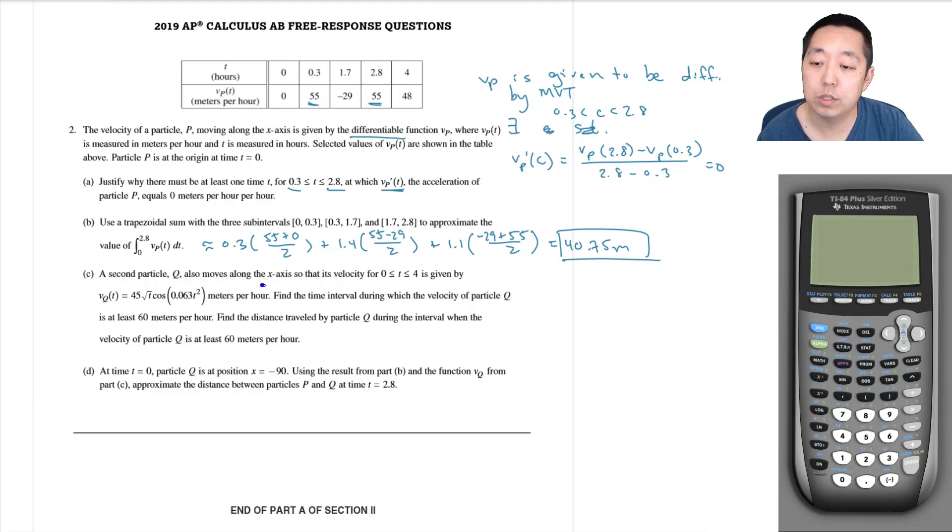Second particle Q also moves along the x-axis so that its velocity, 0 less than equal to t less than equal to 4, is given by this equation. Find the time interval in which the velocity of particle Q is at least 60 meters per hour, and find the distance traveled by particle Q during the interval when the velocity is at least 60 meters per hour.